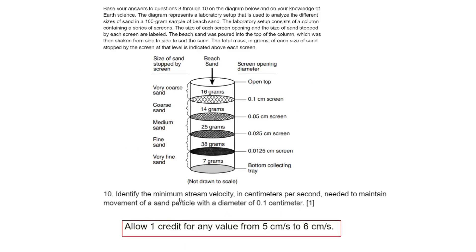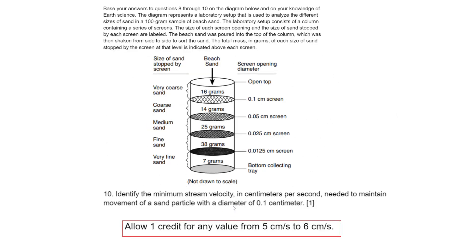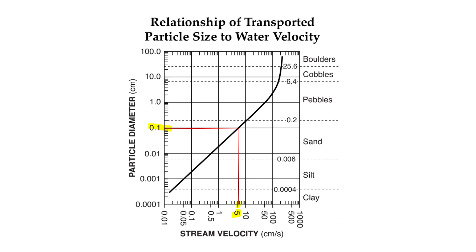Number 10: Identify the minimum stream velocity in centimeters per second needed to maintain movement of a sand particle with a diameter of 0.1 centimeter. You can get credit if you have a value between 5 centimeters per second to 6 centimeters per second. Anytime you hear stream velocity, you should go on your reference table page 6. My particle diameter is around 0.1 centimeters and I'm asked for the minimum stream velocity. The particle diameter is on the y-axis. Here's 0.1. I go sideways, stop at the black line, go down. My minimum stream velocity should be somewhere around 5 to 6 centimeters per second.